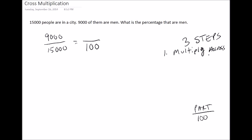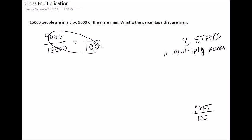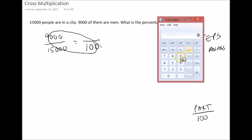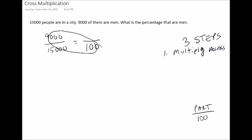So what we're going to do is we're going to take 100 and we're going to multiply it by 9,000. You can feel free to use a calculator for this. So 9,000 times 100. And that's going to equal 900,000. So now we're going to write 900,000 right here.